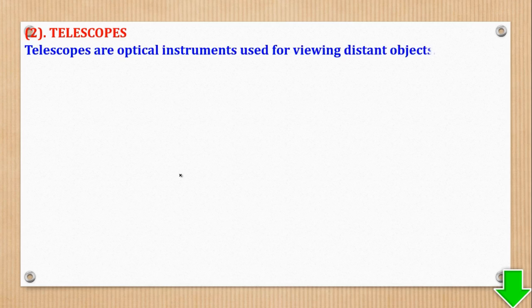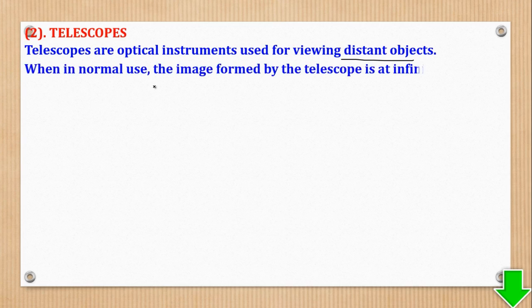Now we go to telescopes. Telescopes are optical instruments used for viewing distant objects — opposite to microscopes which view near objects. For telescopes, when in normal use the image is formed at infinity, and when not in normal use the image is at near point. This is the reverse of microscopes.